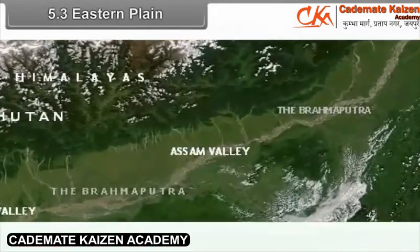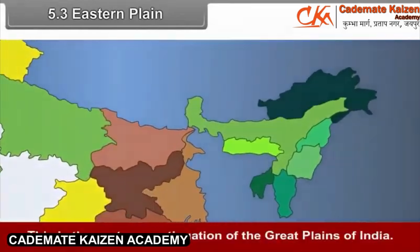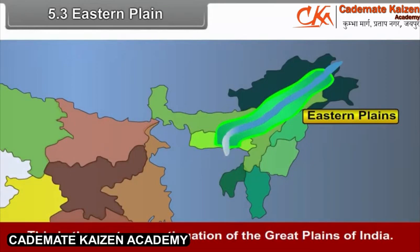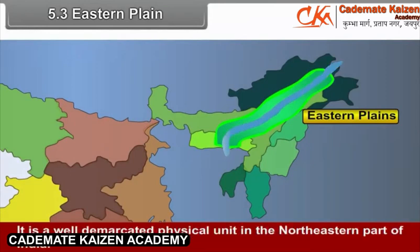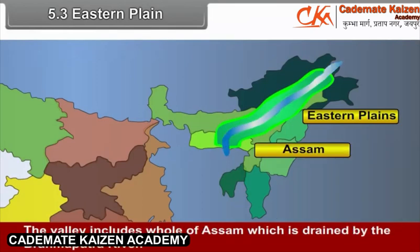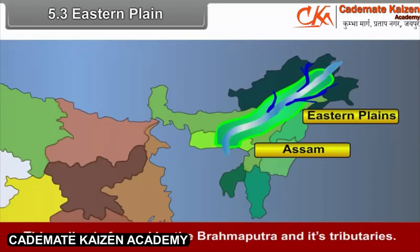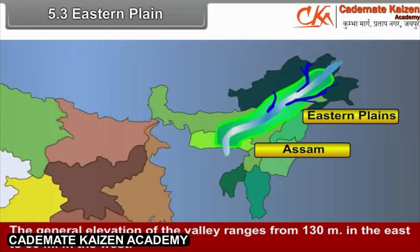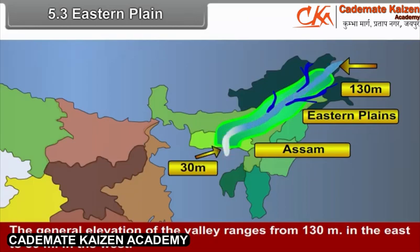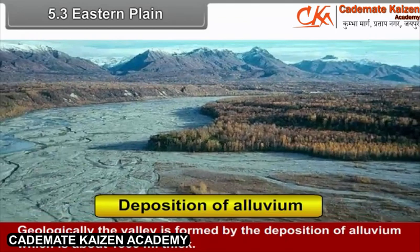5.3 Eastern Plain. This is the eastern continuation of the Great Plains of India. It is a well-demarcated physical unit in the northeastern part of India. The valley includes the whole of Assam, drained by the Brahmaputra River. This valley is formed by the Brahmaputra and its tributaries. The general elevation of the valley ranges from 130 meters in the east to 30 meters in the west. Geologically, the valley is formed by the deposition of alluvium, which is about 1500 meters thick.